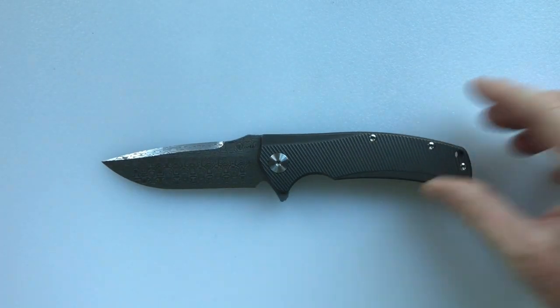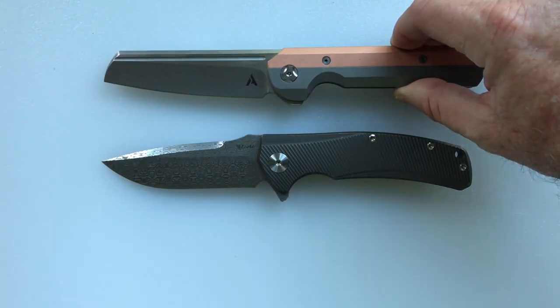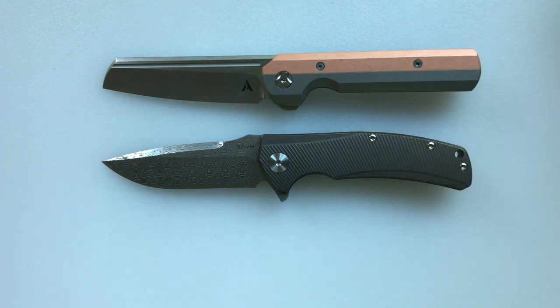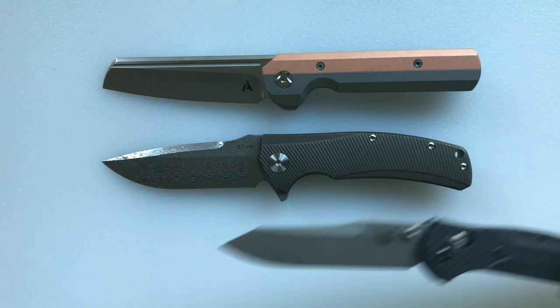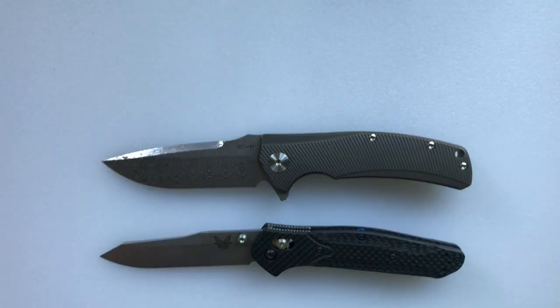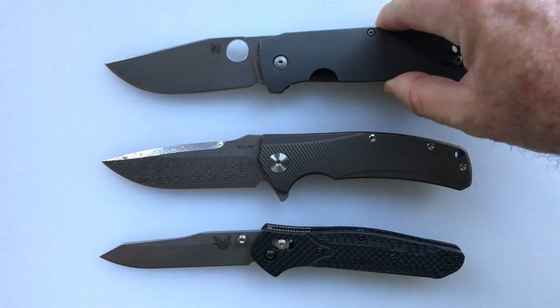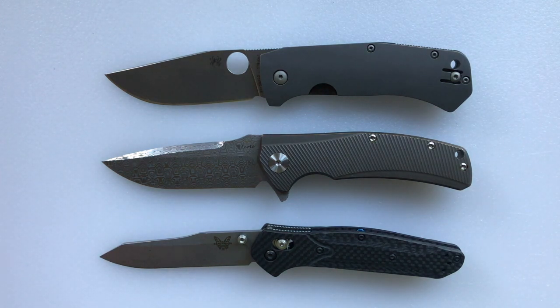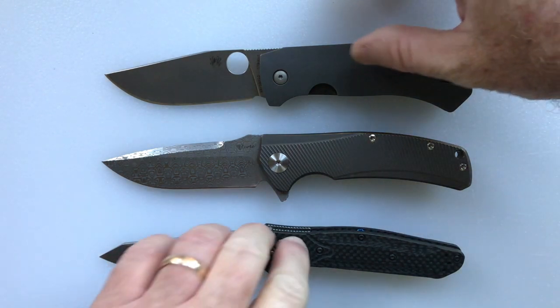We have some knives for comparison that are similar in length: the Arcform Slimfoot, the Benchmade 940, and the Kizer Sleash Buoy. All of these knives are approximately the same length as the Mini Horizon.